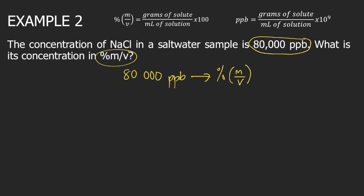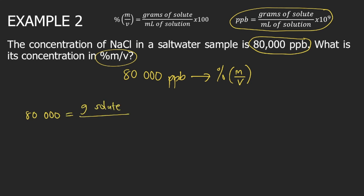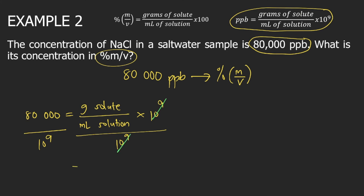First, use the formula for PPB. According to the formula, PPB — so 80,000 — is equal to grams of solute divided by mL of solution times 10 to the 9. Dividing both sides by 1 billion (10 to the 9), the 10 to the 9 cancels on the right side, leaving grams of solute divided by mL of solution. On the left side, you have 80,000 divided by 10 to the 9.